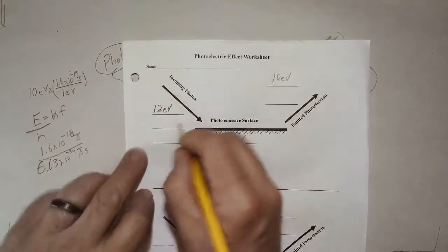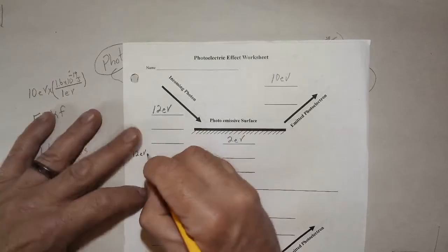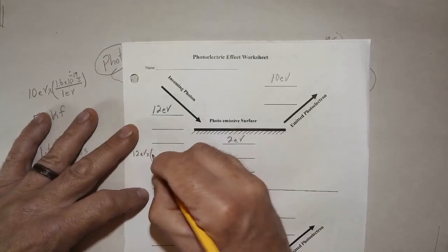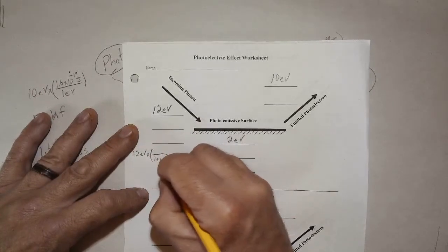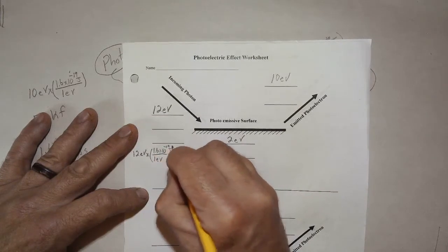So let's convert this to joules. So we have 12 eV times, well, 1.6 times 10 to the minus 19th joules.